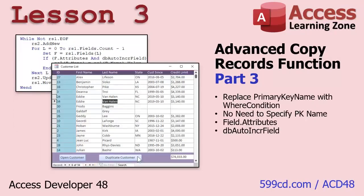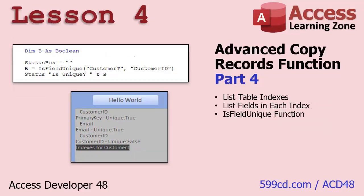In Lesson 3 we're going to get rid of having to specify the primary key field name. We'll replace it with a basic where condition, then learn about field attributes and the auto-increment field attribute — which indicates an auto number field. This means we can automatically detect the auto number primary key instead of having to tell the function what it is.